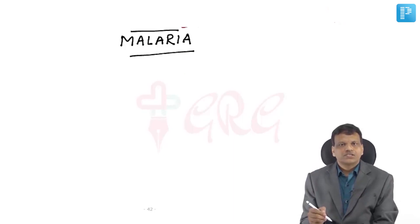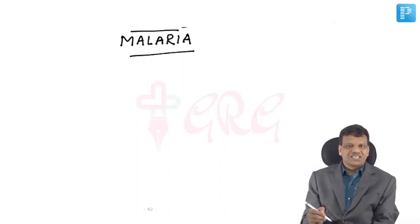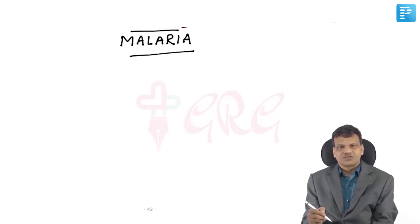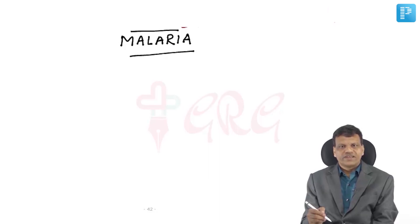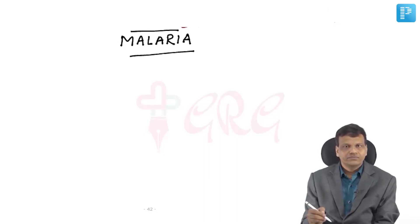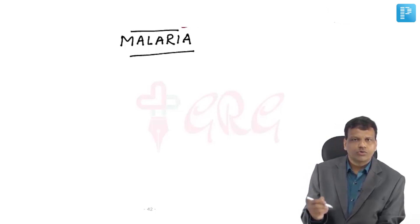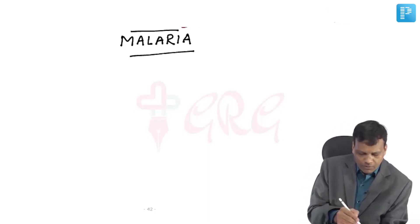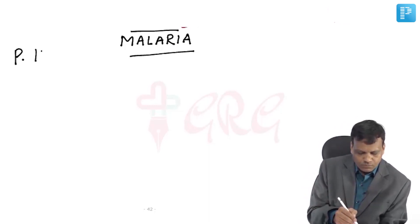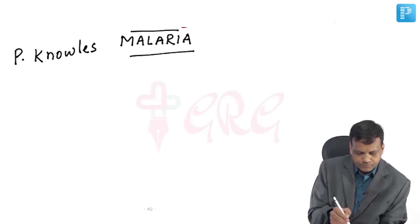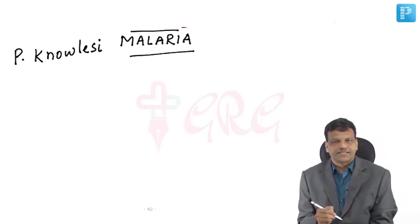Malaria is caused by Plasmodium, and we currently have 5 species. Four well-known ones are Plasmodium vivax, ovale, falciparum, and malariae. Recently, a fifth parasite has also been found to cause human infection: Plasmodium knowlesi, which is the fifth parasite.